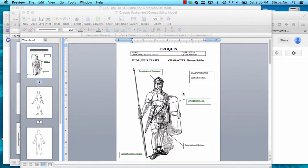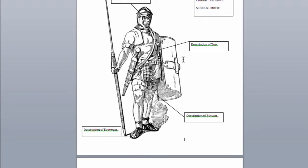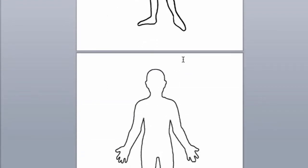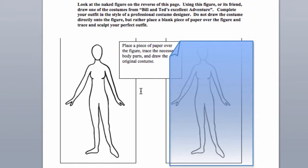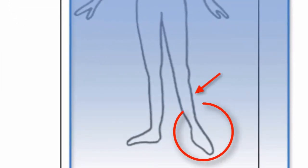Once I know that, I'm going to use something called a croquis to create a costume for this character. A croquis is a naked figure of sorts — a black and white drawing of the body that the costume can be created on. Essentially, what I do is place a piece of paper over the figure and draw the original costume. When I'm done, I trace the necessary body parts that have not been covered by clothing. For example, if I did a sleeve that went down to about here, I would trace the hand when done. If I did a dress that went down to here, I would trace the legs when done.